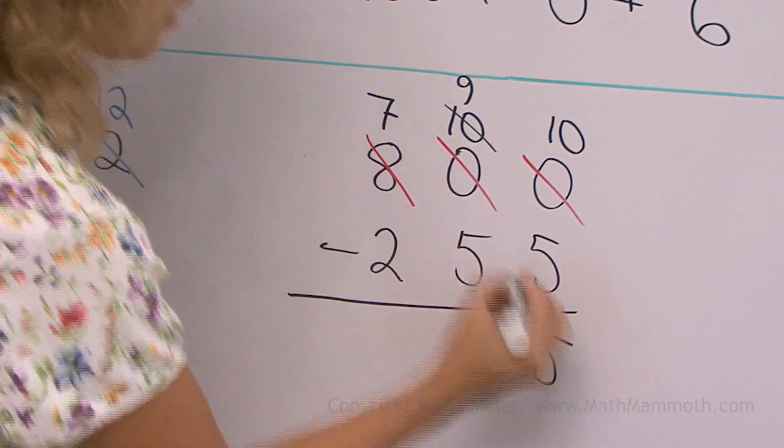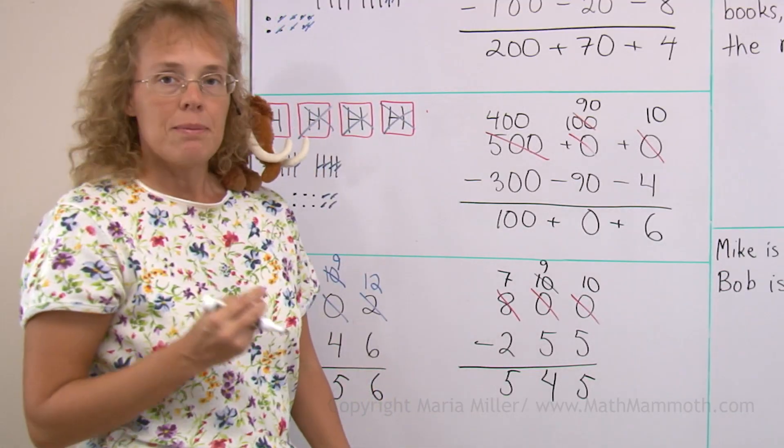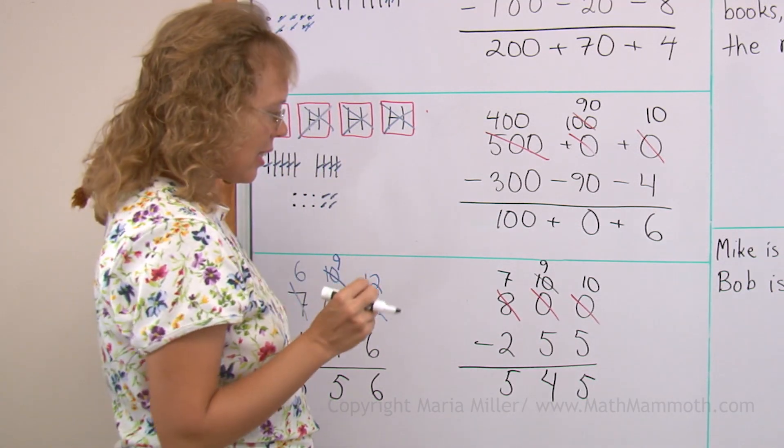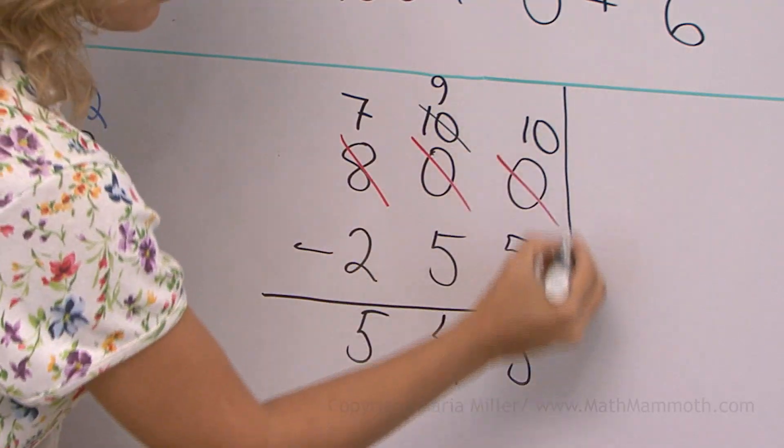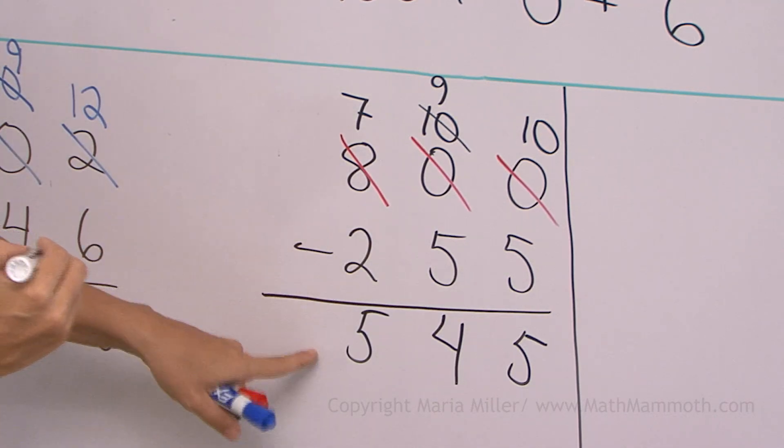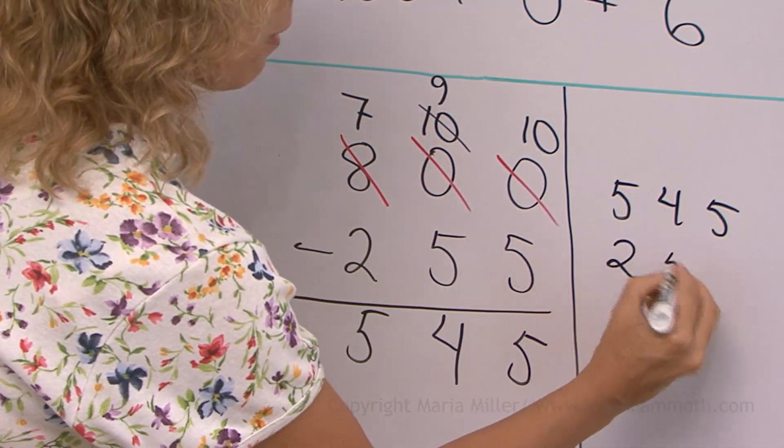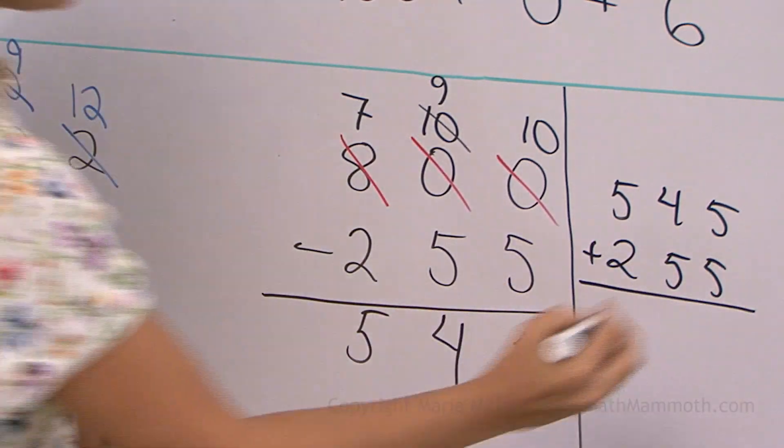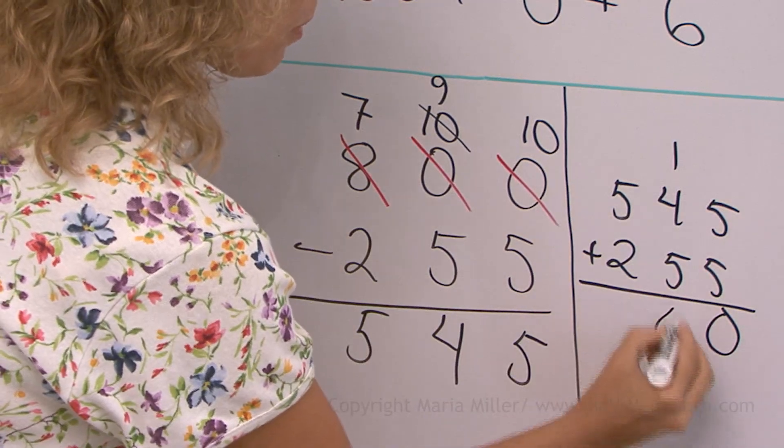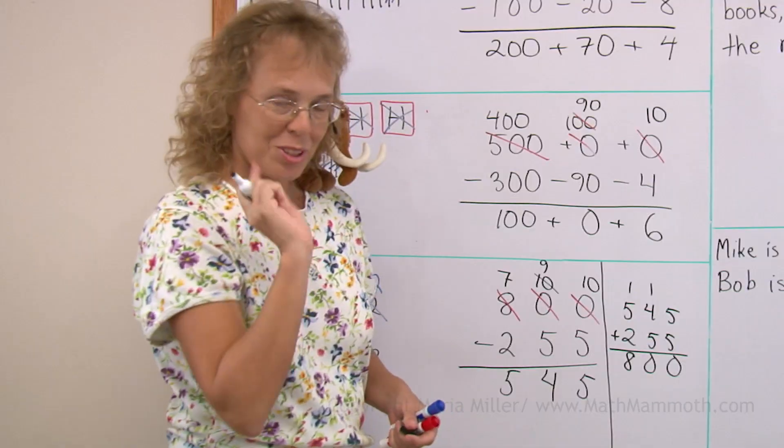Ten minus five, nine minus five, and seven minus two. Let's also check this result. Did I get it right? I have just a little bit of space here. I would add this and this. Five, four, five, and two, five, five. Add them. We get ten, we get ten, and eight. Eight hundred. So it checks.